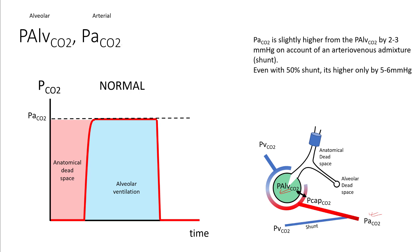P arterial CO2 is slightly higher than P alveolar CO2 by 2 to 3 mmHg, because there are always some anatomical shunts. Even with around 50% shunts, the P arterial CO2 is higher than P alveolar CO2 by only 5 to 6 mmHg. We'll see the importance of this in subsequent slides.